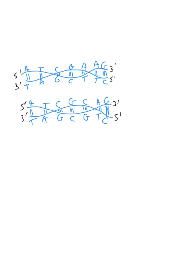Can you spot it? Right here — where there was an A, there's now a C. Because of base pairing, the strand opposite also has different nucleotides. This is called a single nucleotide polymorphism: a single letter that's polymorphic, or different depending on which chromosome you're looking at.